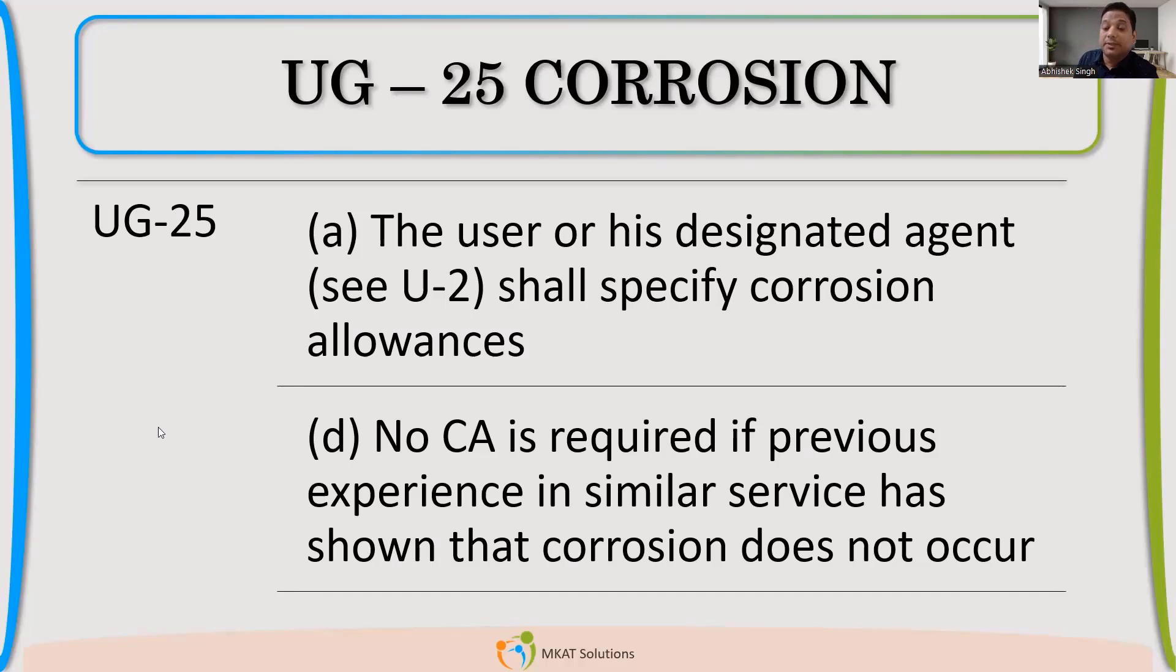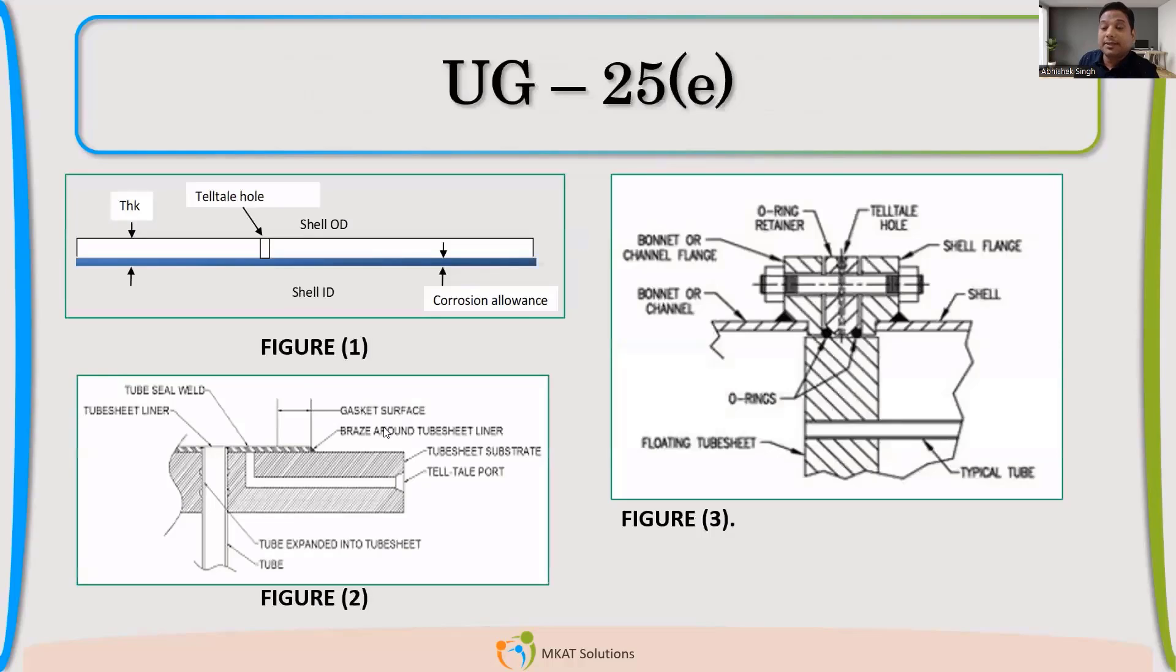These are the second point which is there. Now, the third point is about telltale hole. You might have heard of it. What is the use of telltale hole? So if you see the figure one, just concentrate on figure one. The white part is the pressure part. The blue one is the Corrosion Alliance.